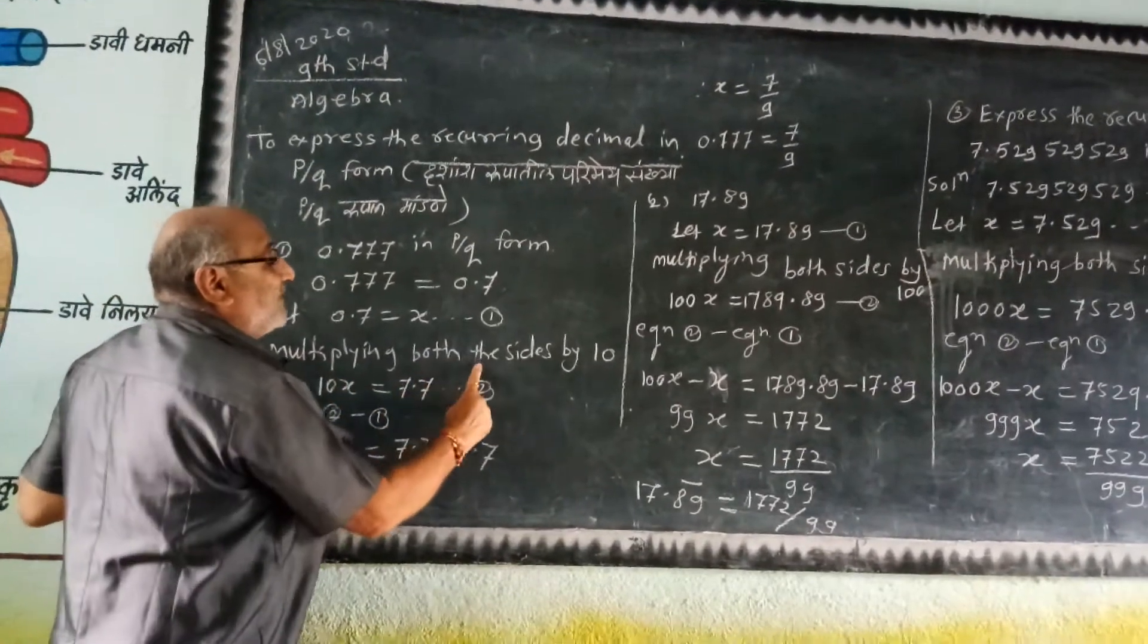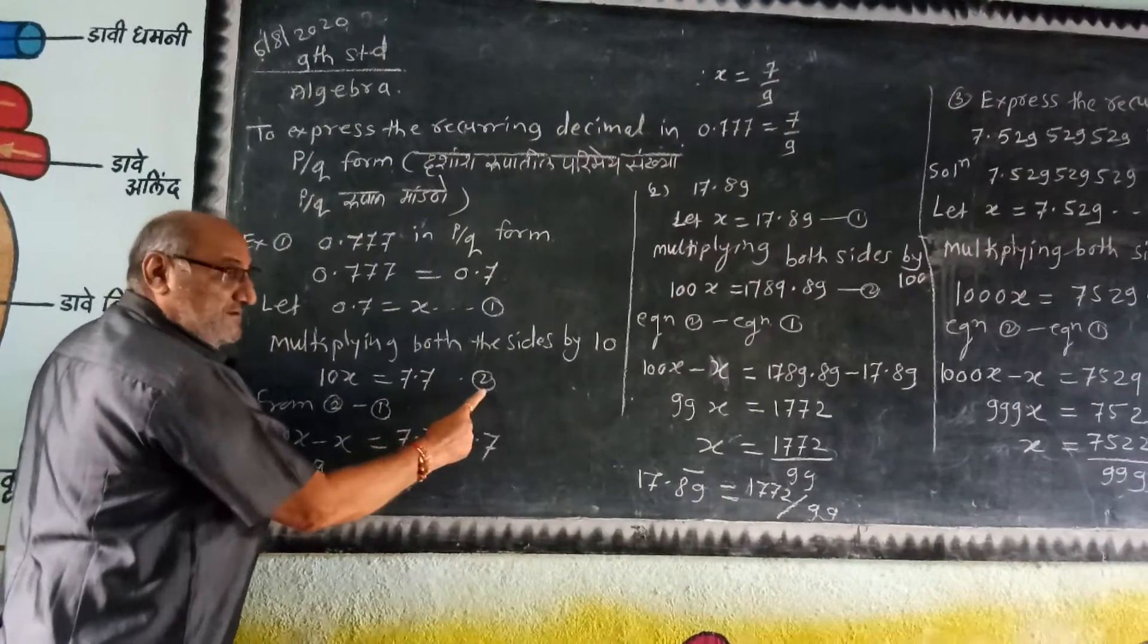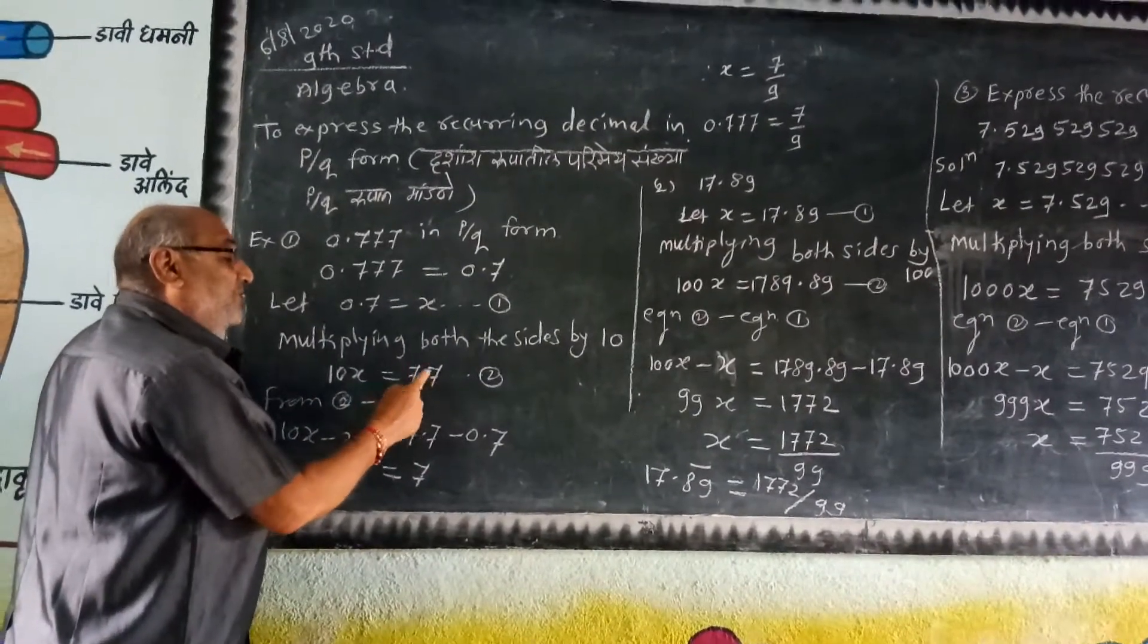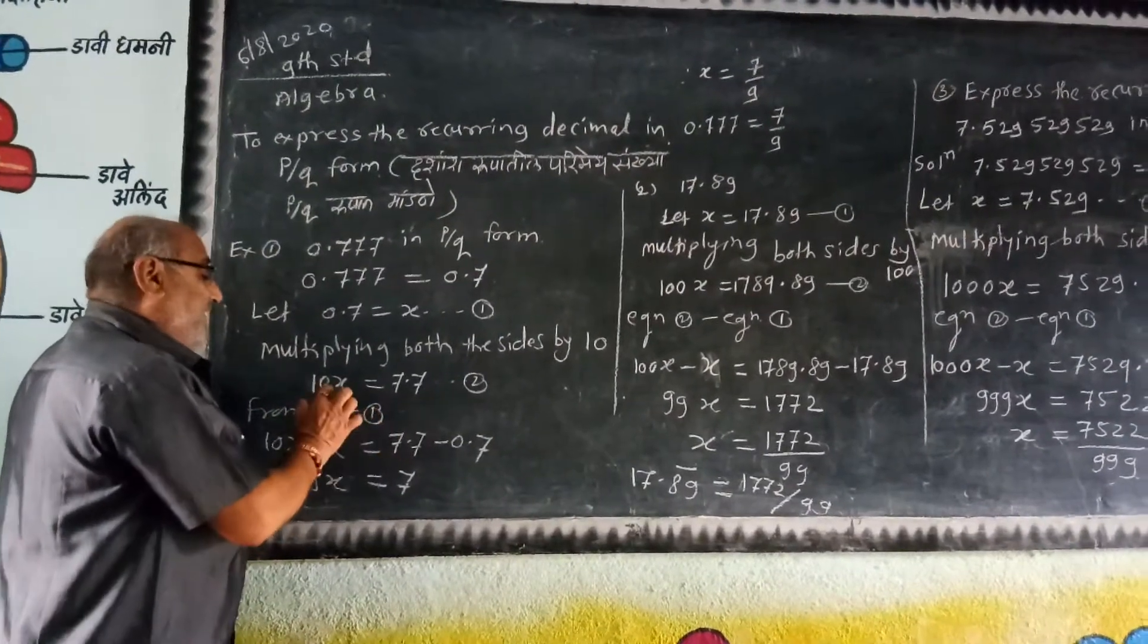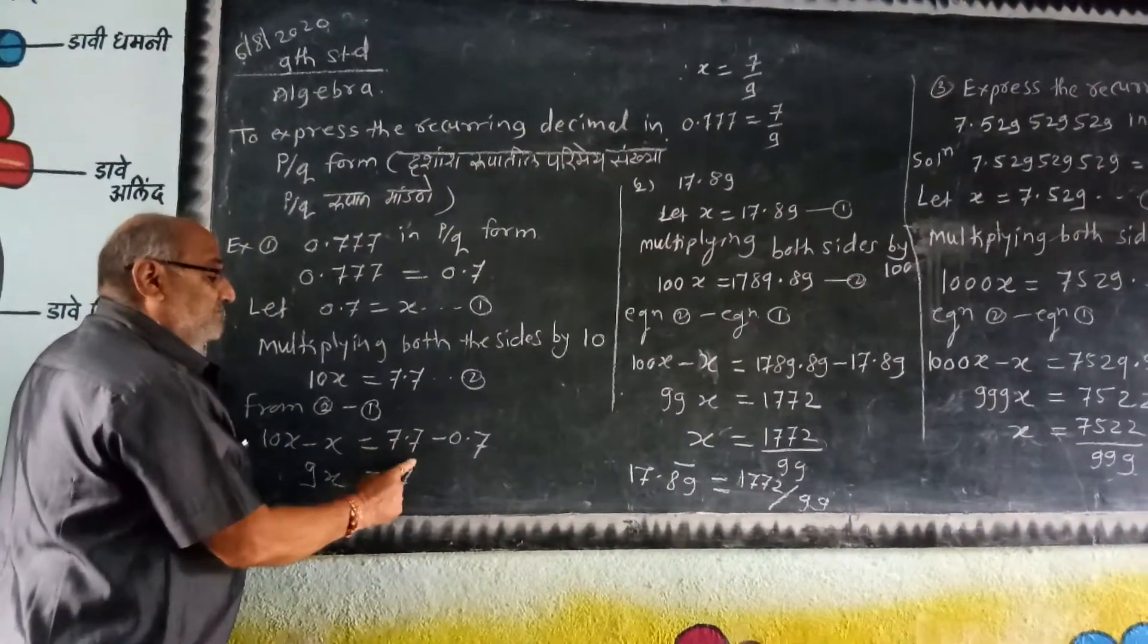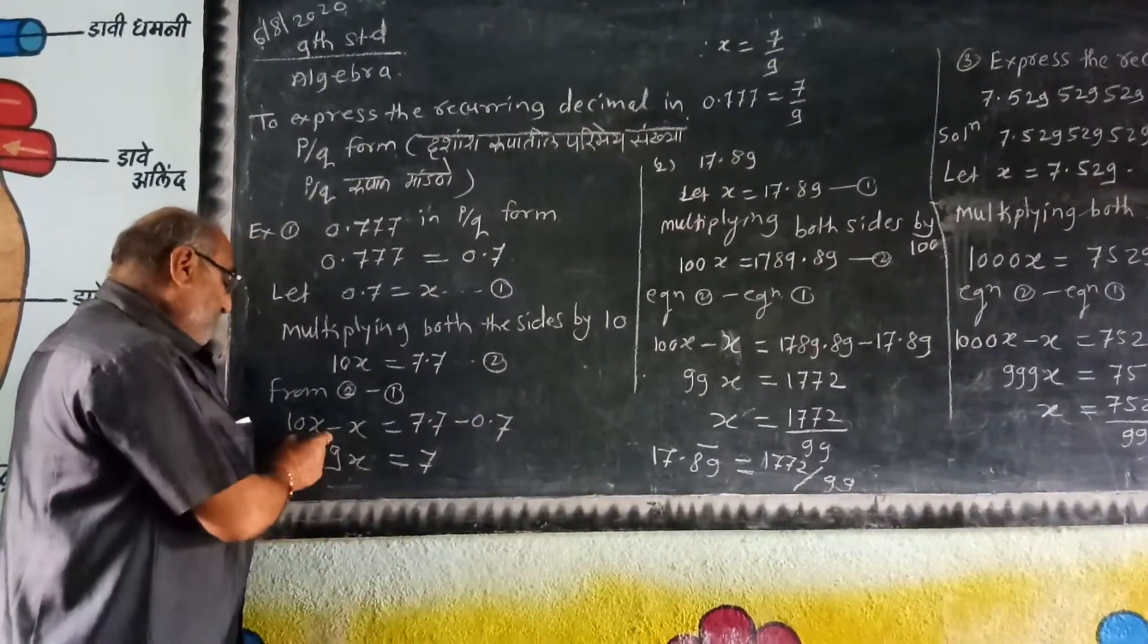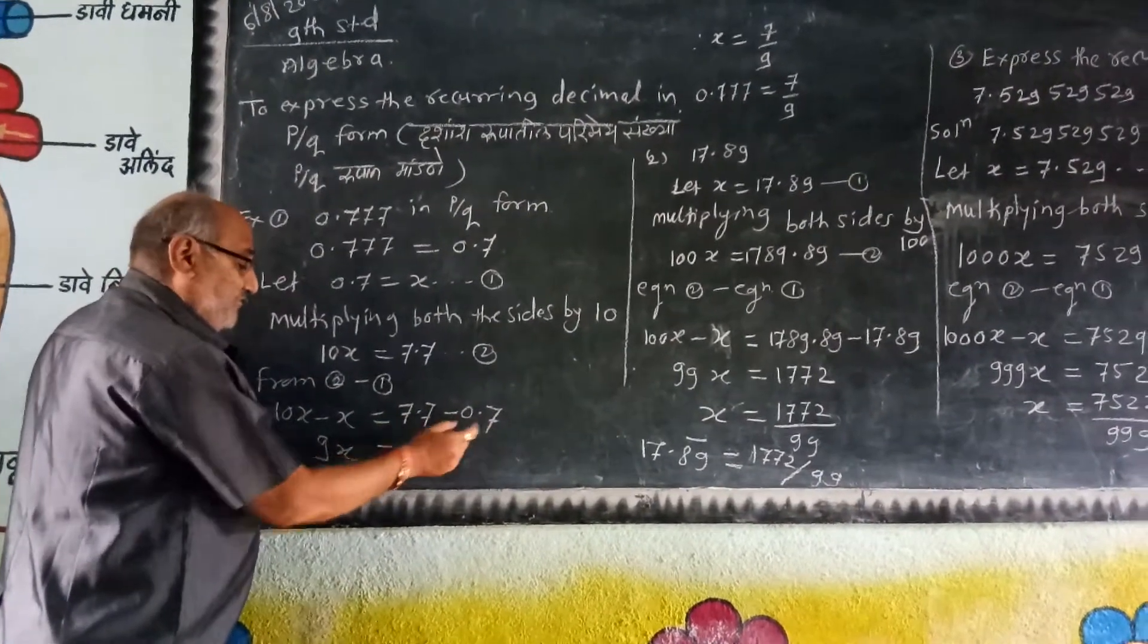Multiply both sides by 10. 10x is equal to 7.7̄. This is equation number 2. So 10x minus x is equal to 7.7̄ minus 0.7̄. 10x minus x equals 9x equals 7.7 minus 0.7, which remains 7.